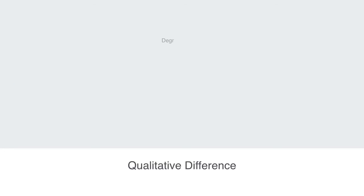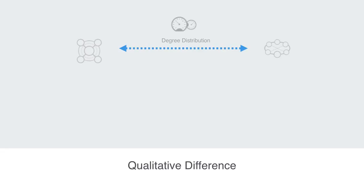Lastly, just to emphasize that this degree distribution parameter may be a quantitative parameter, but changing it can have a qualitative effect on the network we're dealing with. If you're inside one of these networks that we've listed above, things are very different depending on which one you're in.